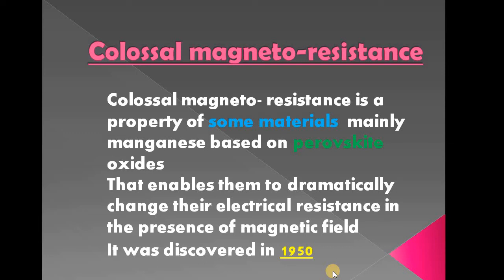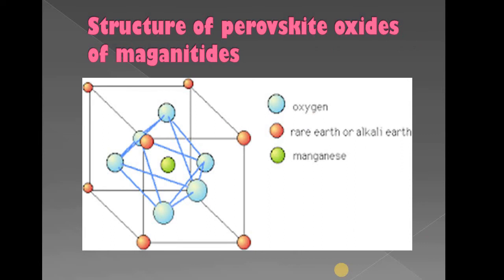Next is the structure of perovskite magnetites. Every compound of the magnetite type has a similar structure. You can see here how the rare alkaline metal surrounds the oxygen atoms, and those oxygen atoms surround the manganese elements. Keep in mind that every atom or subatomic particle has its own spin, by which magnetic fields are induced.